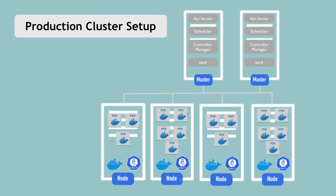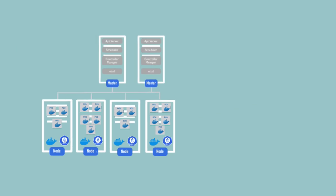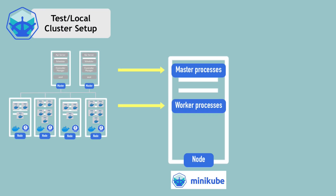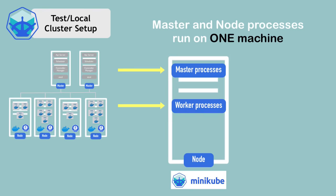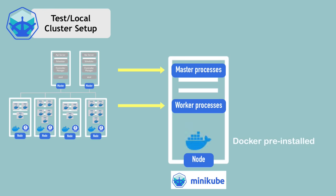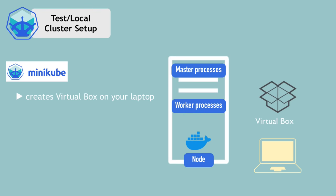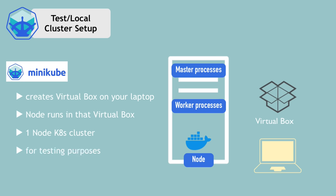Exactly for that use case, there is an open source tool called Minikube. Minikube is basically a one node cluster where the master processes and the worker processes both run on one node. This node will have a Docker container runtime pre-installed, so you'll be able to run containers or pods on this node. It runs on your laptop through a virtual box or some other hypervisor. Minikube will create a virtual box on your laptop and the node runs in that virtual box. To summarize, Minikube is a one node Kubernetes cluster that runs in a virtual box on your laptop, which you can use for testing Kubernetes on your local setup.